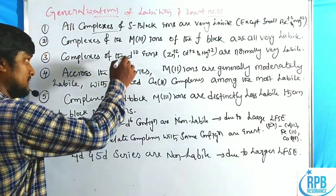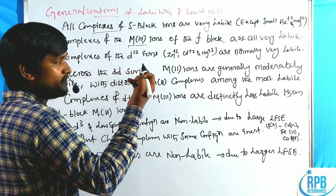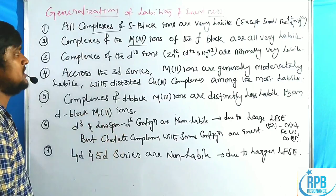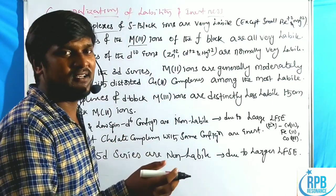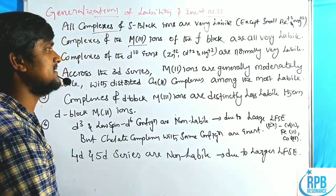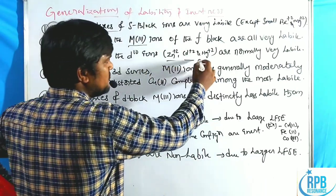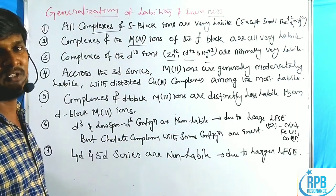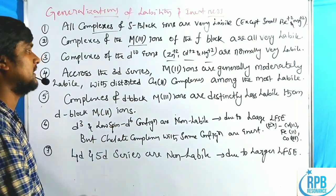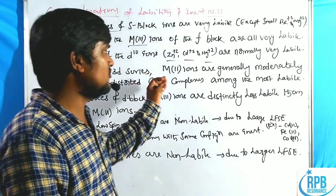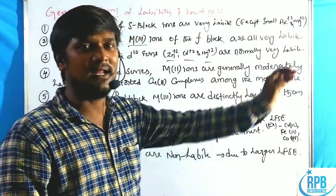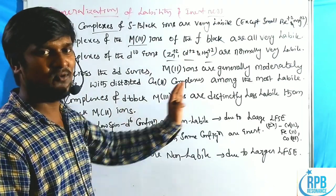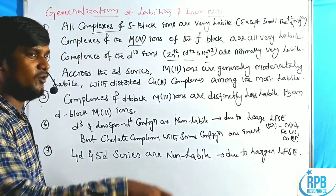Point 3: complexes of D10 configuration are generally very labile — like Zn2+, Cd2+, Hg2+ — because they cannot resist any substitution as the d-orbital is completely filled. Point 4: across the 3D series from scandium to zinc, metal ions are generally moderately labile. Copper +2 is the most labile due to its Jahn-Teller distorted nature.